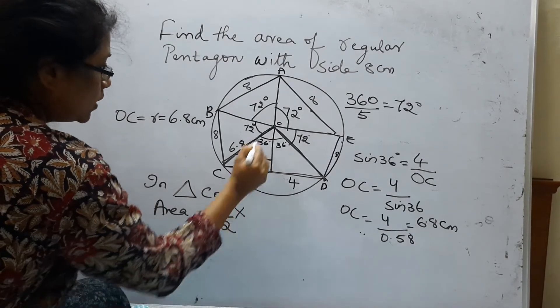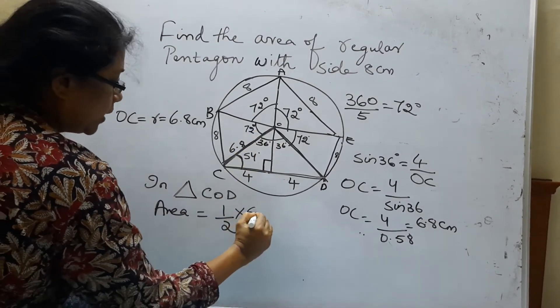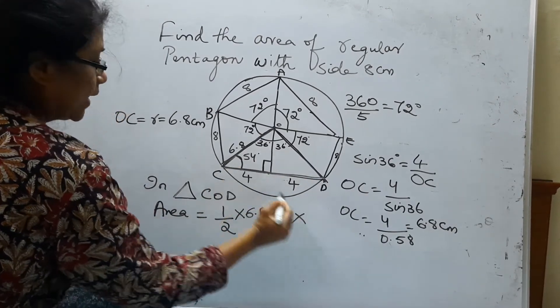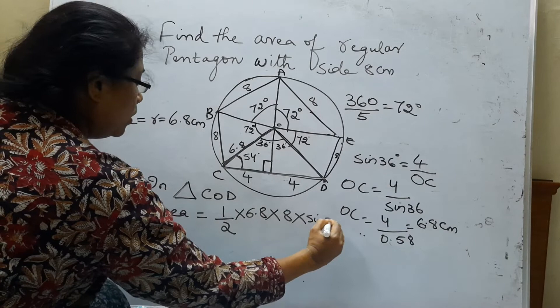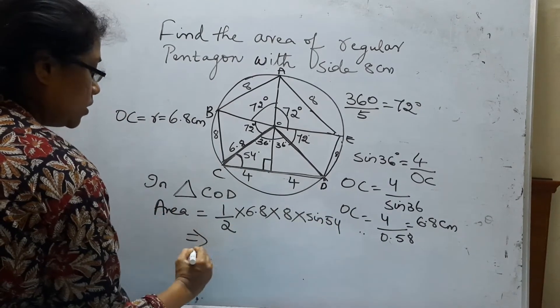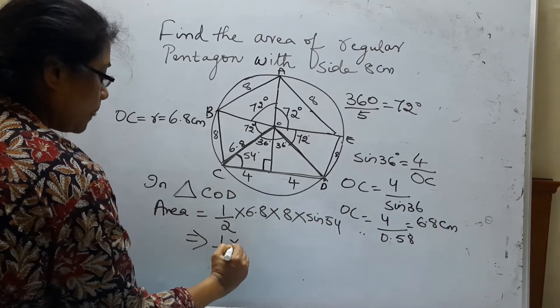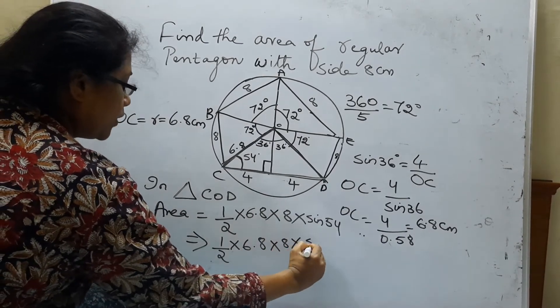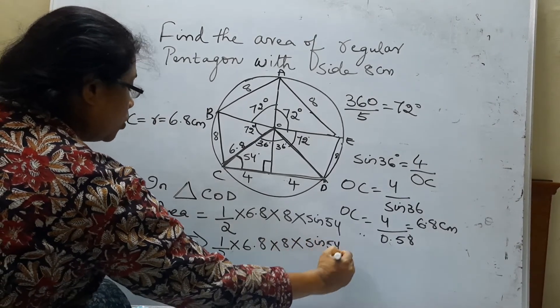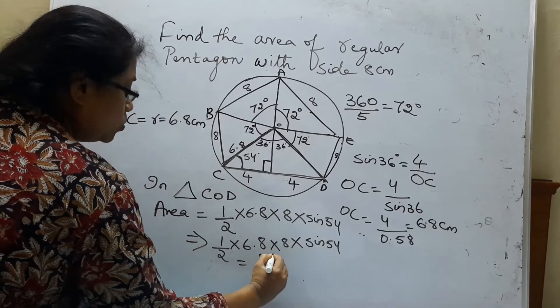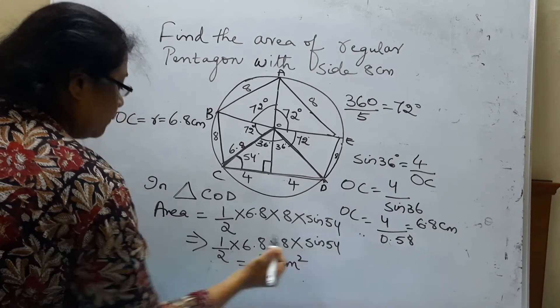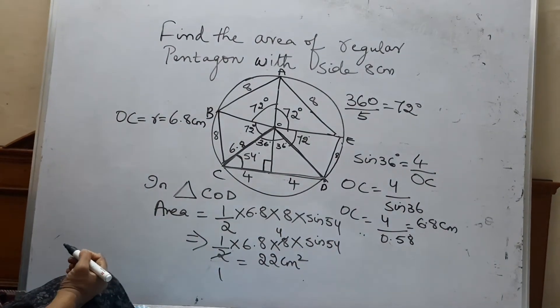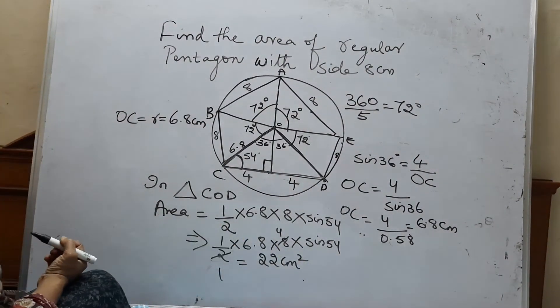Half into this side that is 6.8, this is 8, and sine 54. So that is half into 6.8 into 8 into sine 54. You just substitute the value. You will get around 22 centimeters square. Just find out in the scientific calculator what is sine 54.